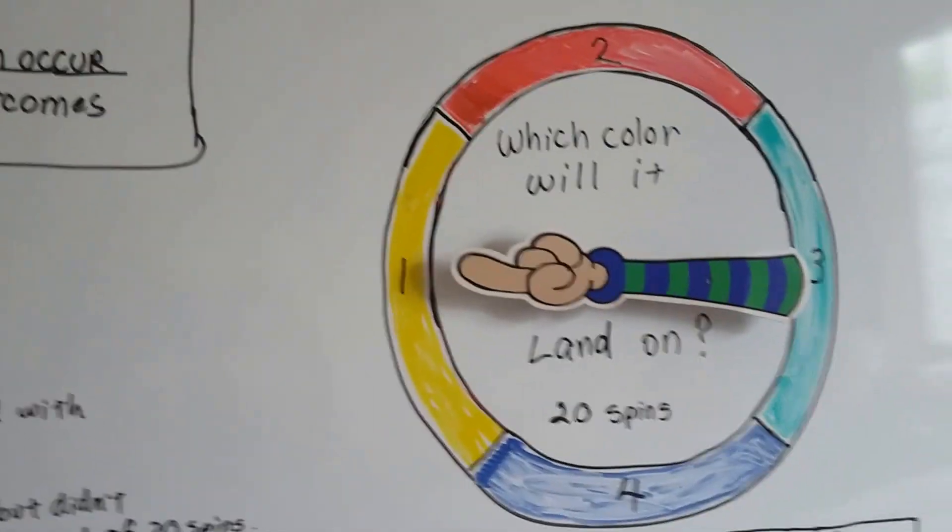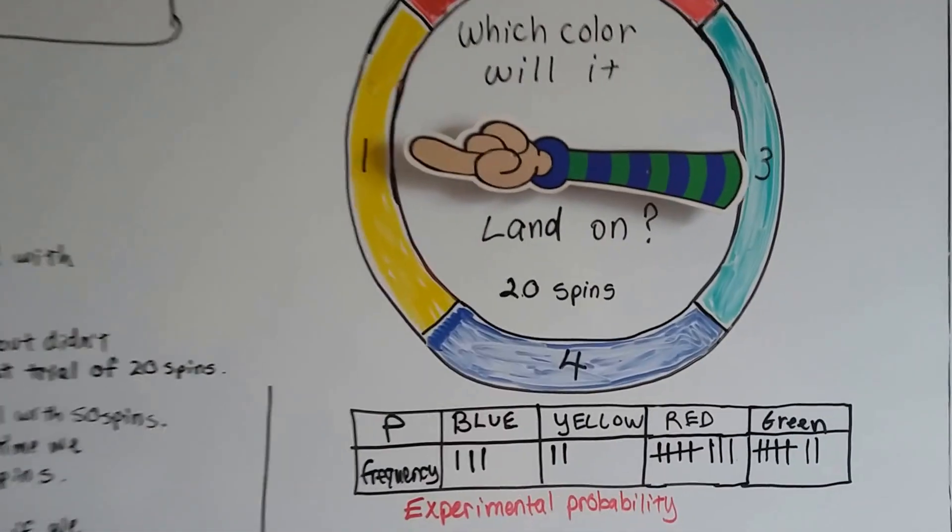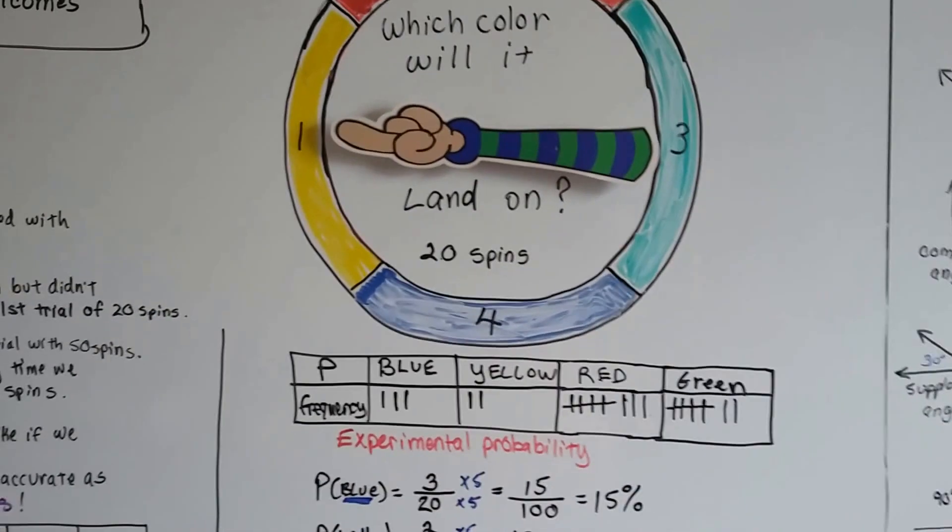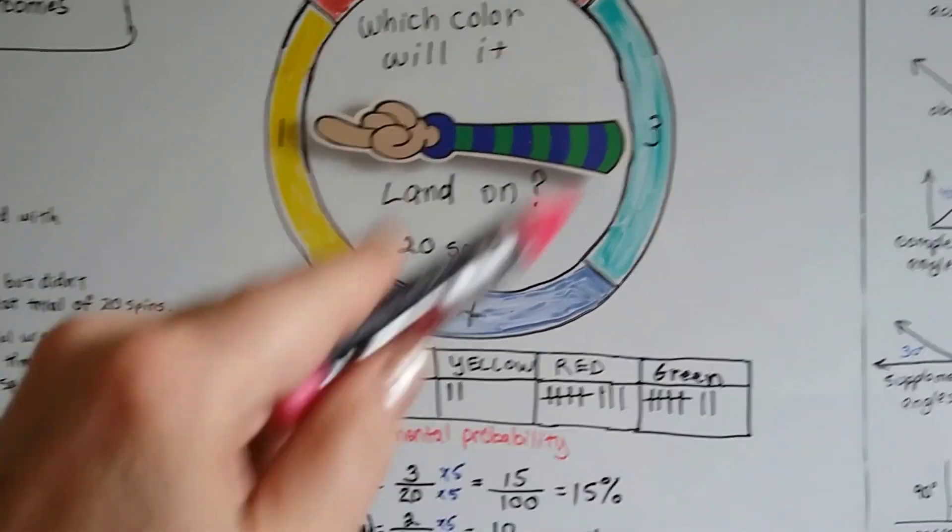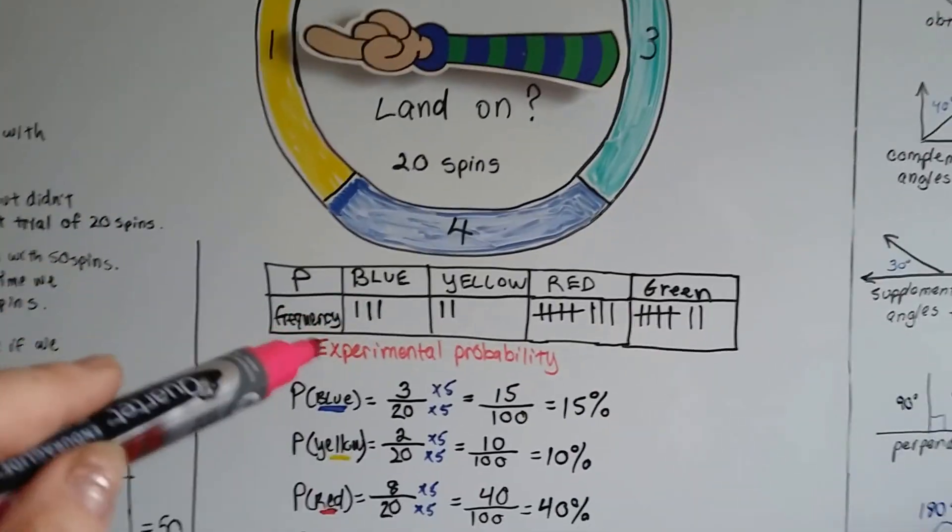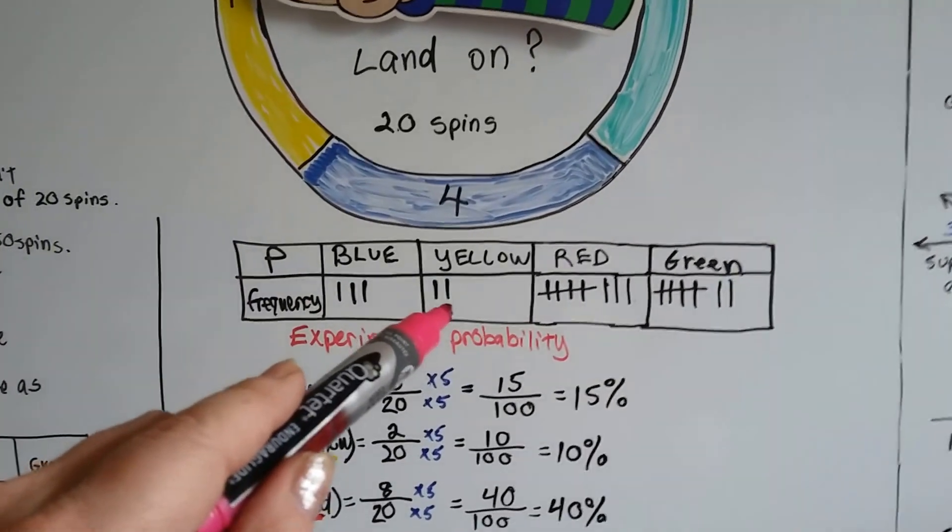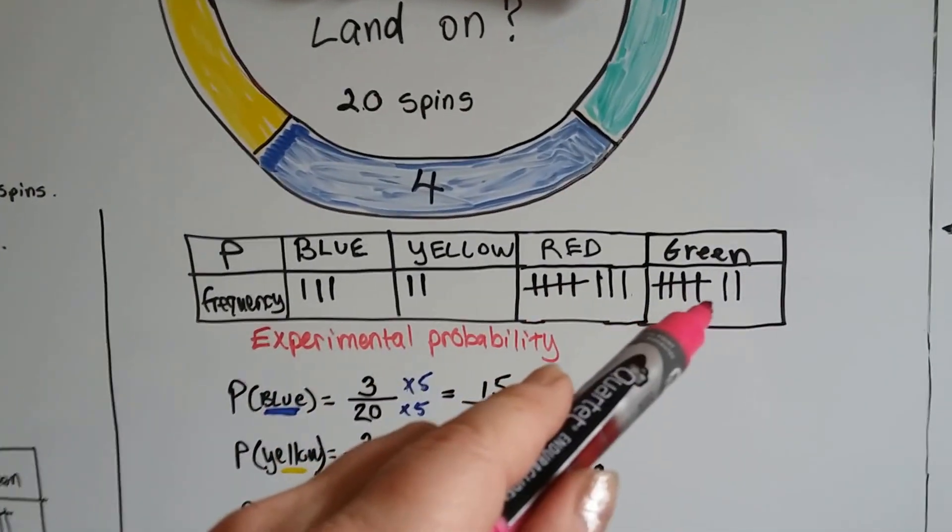So, what I did was, I had my color wheel, and if you've seen the previous video, you know that I spun my color wheel 20 times, and it landed on the blue 3 times, the yellow 2 times, the red 8 times, and the green 7 times.